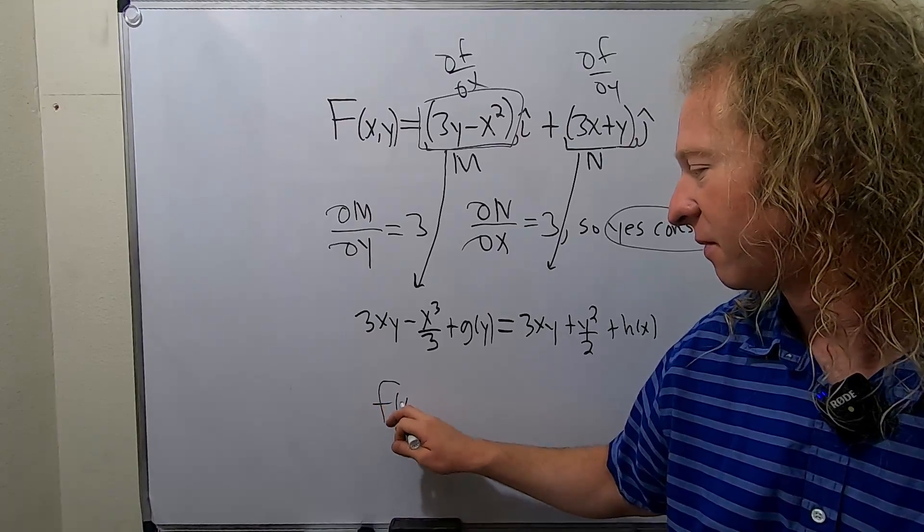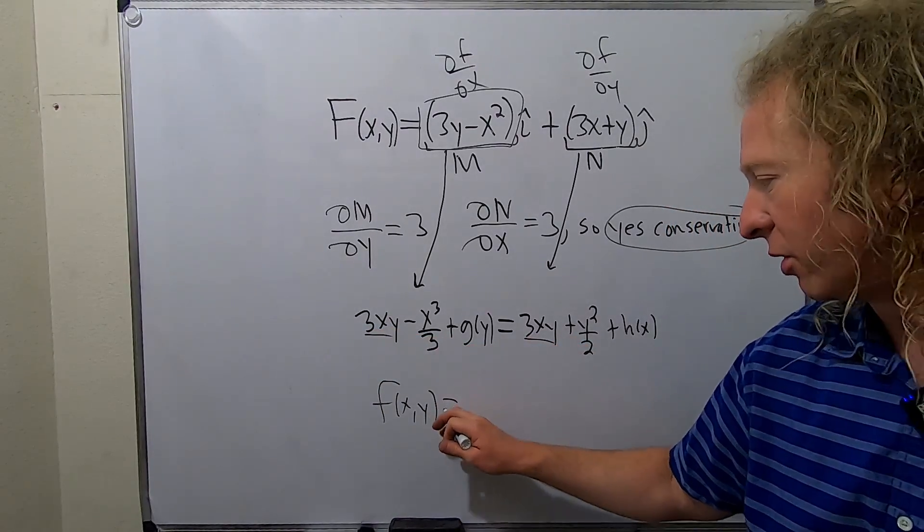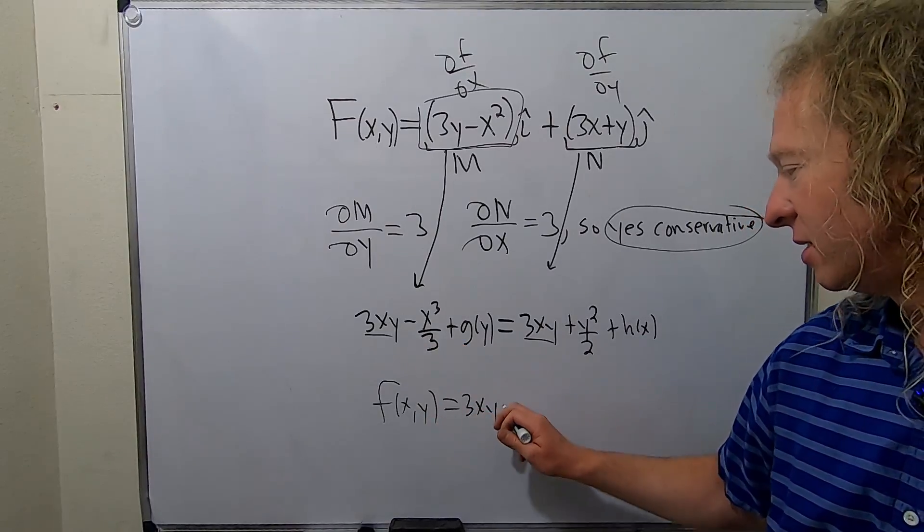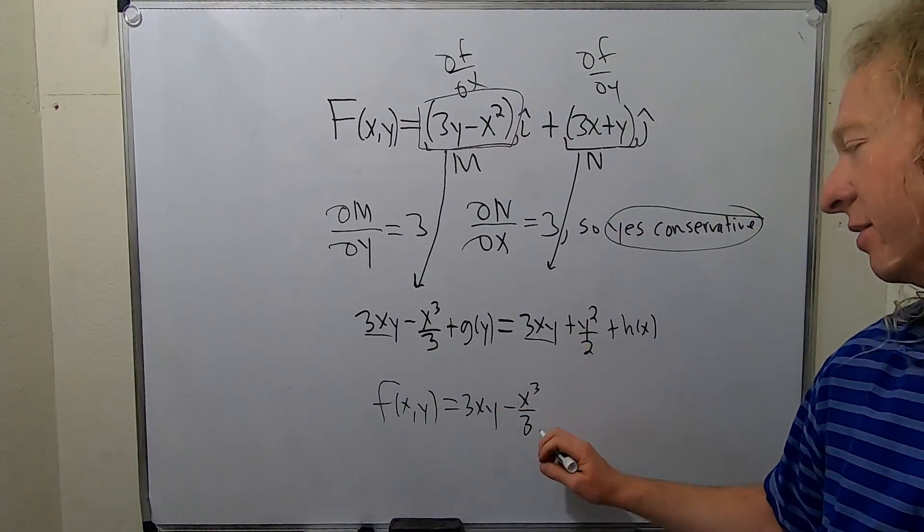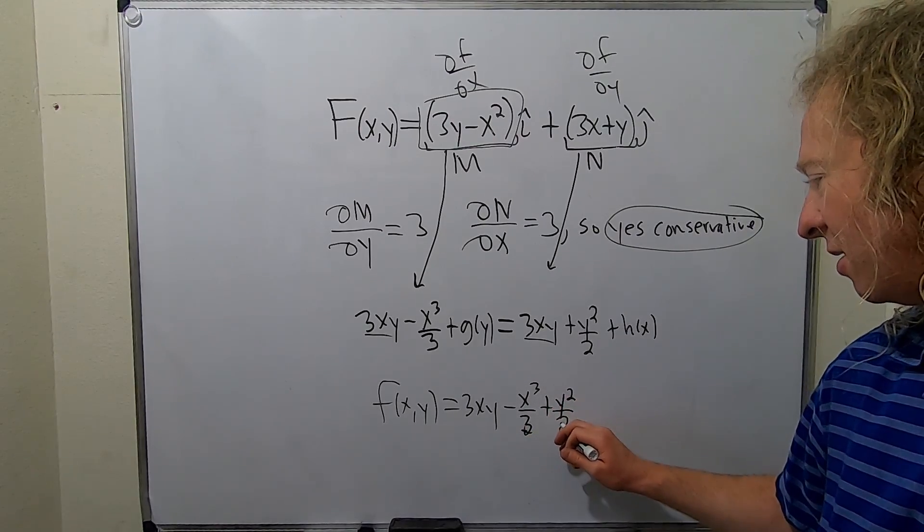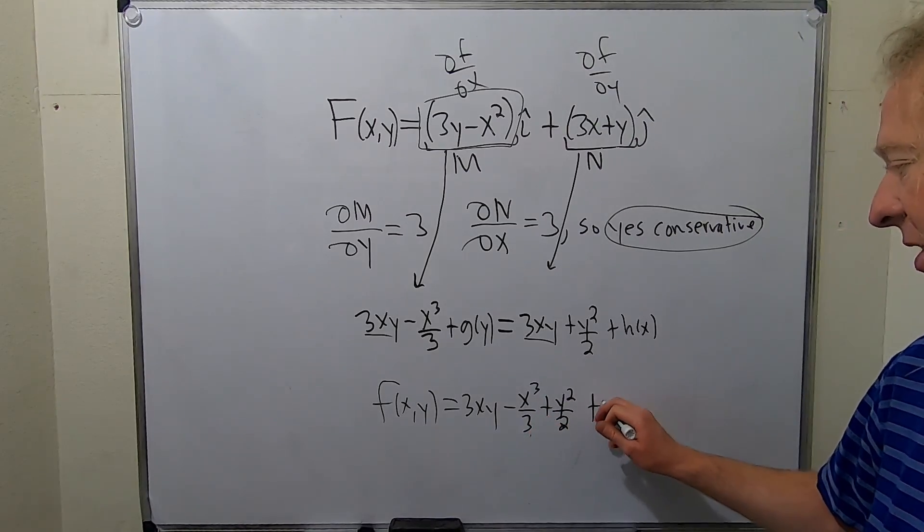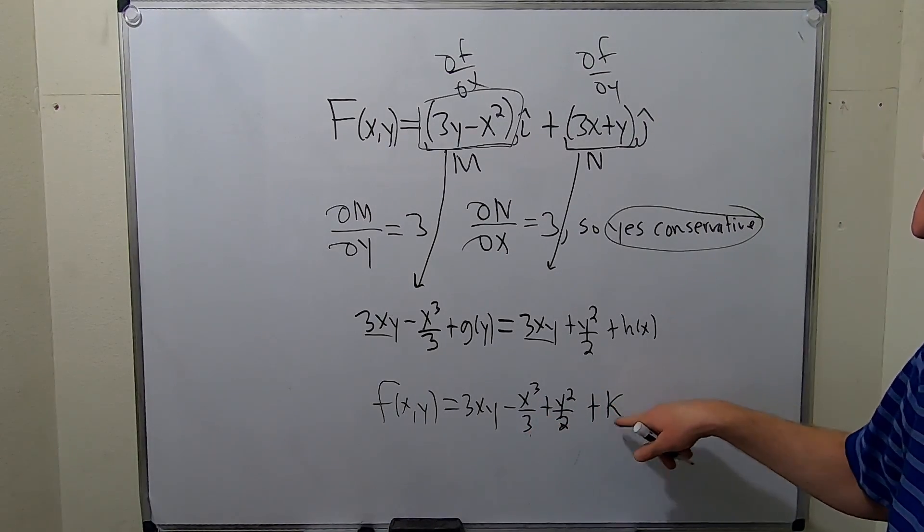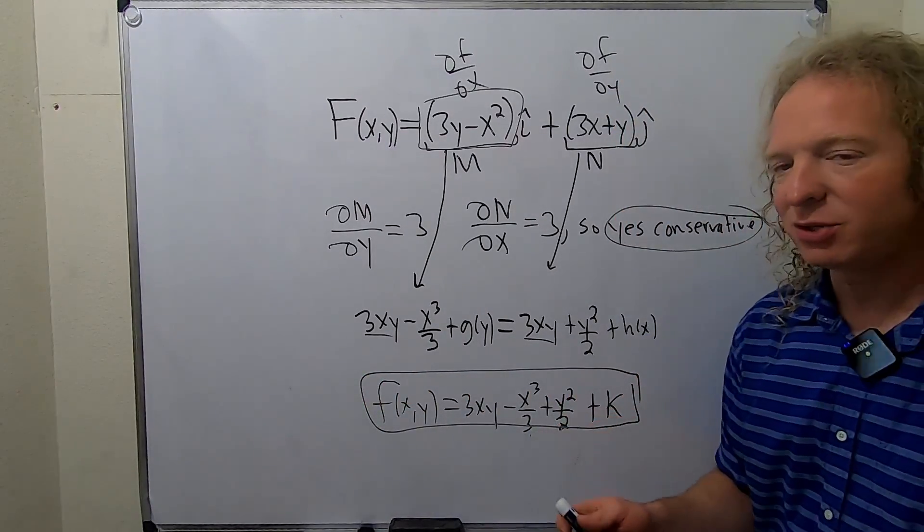So how do you write the answer down? Like this. They're both the same. They both have 3XY, so you only write it once. This one has this. Oh and we also have this. And don't forget to add some arbitrary constant. I'll add like a plus K. Typically people use K or C because when you differentiate the K it goes away.